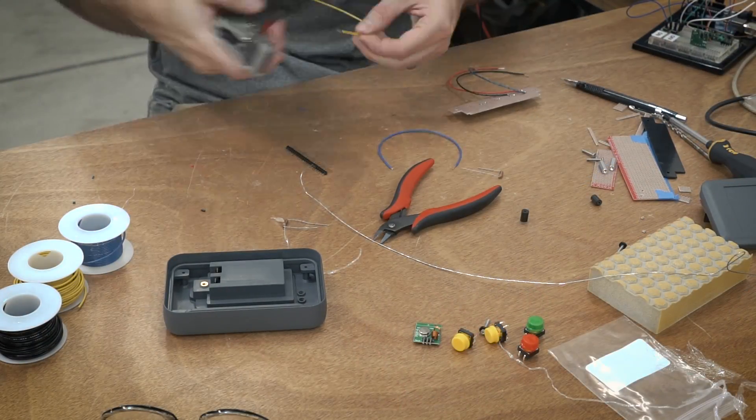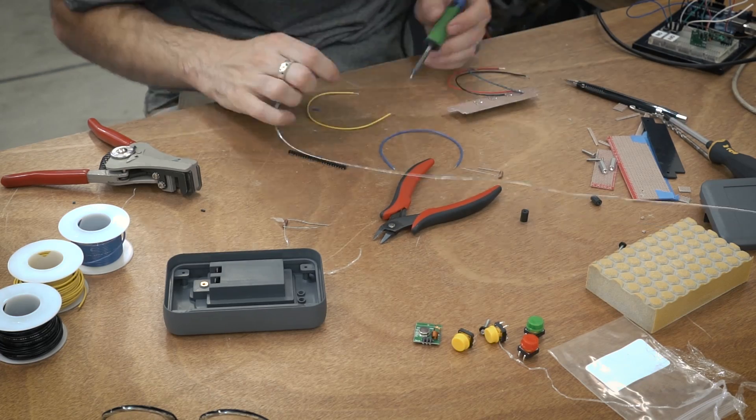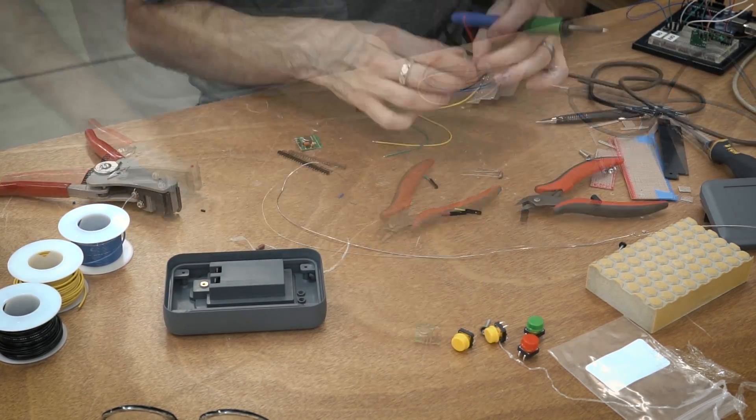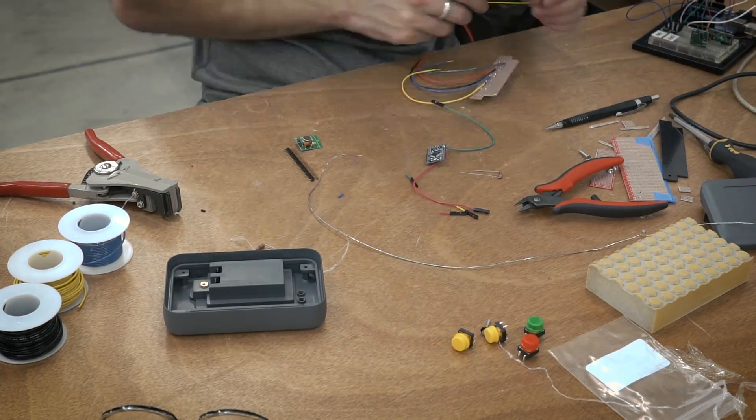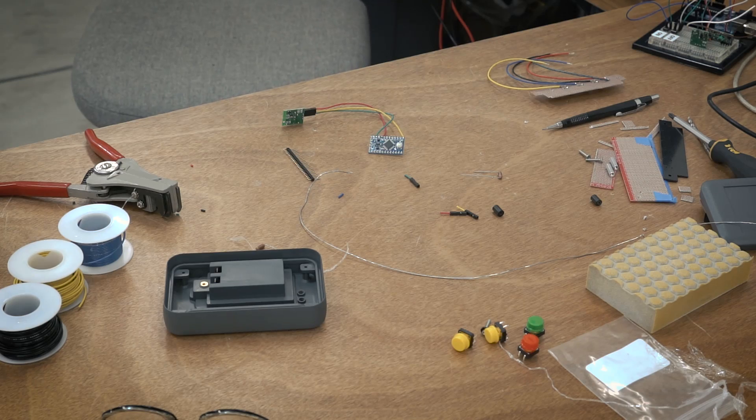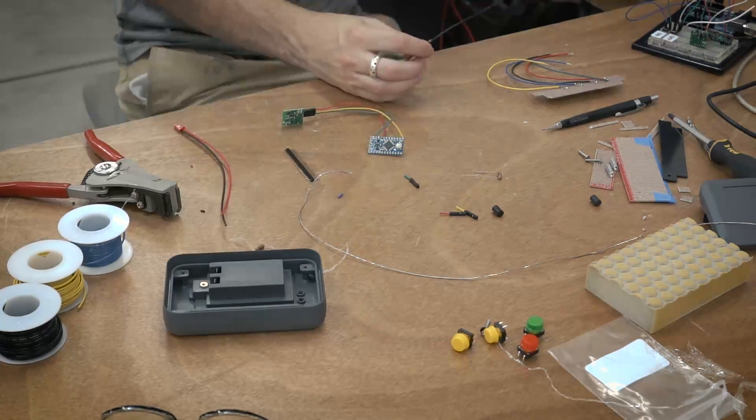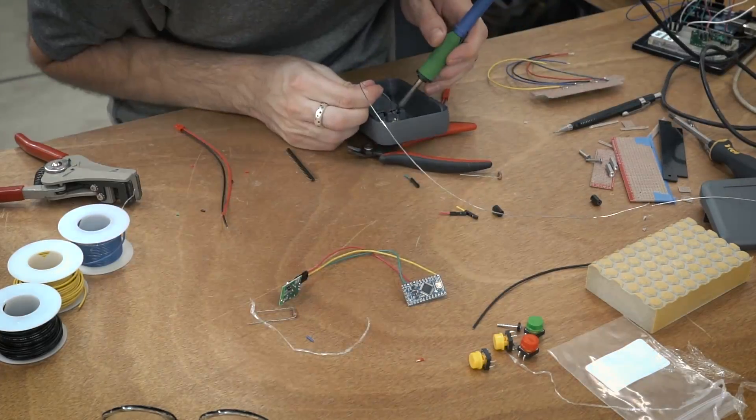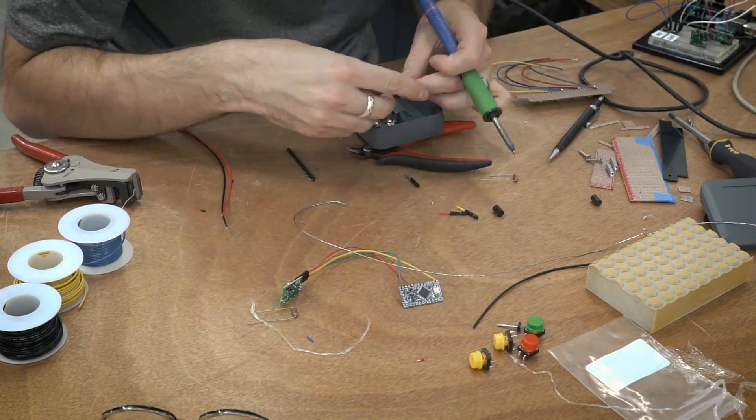Once I got the PCB snap to size I just needed to drill a couple mounting holes in it so that it would mount inside the enclosure, and then I just populated the buttons and started wiring everything up. The wiring was a little bit messy on this. I decided to just hardwire everything directly into the Pro Mini.